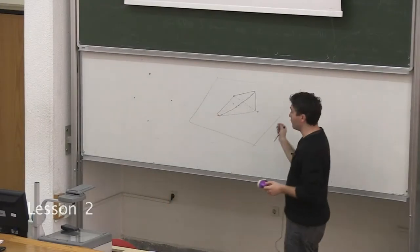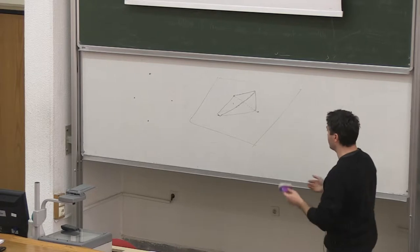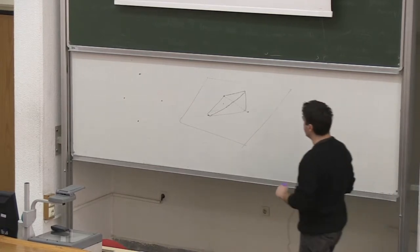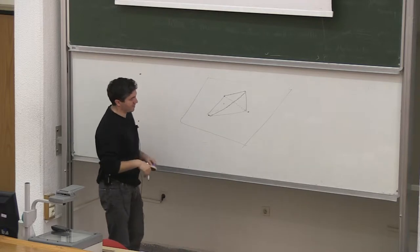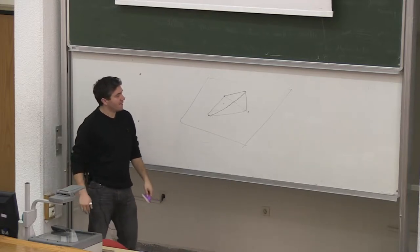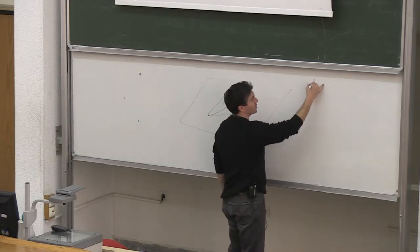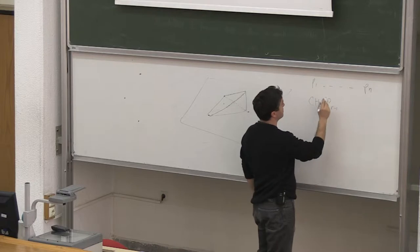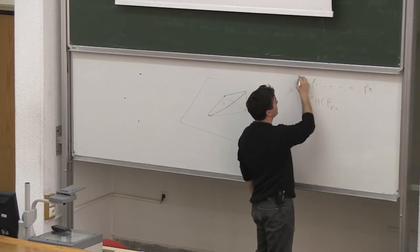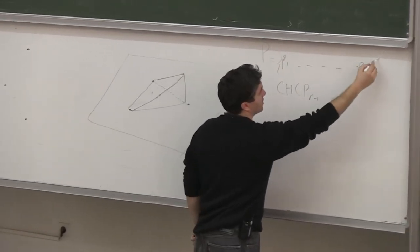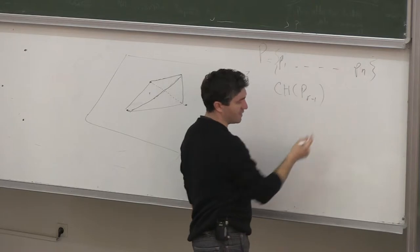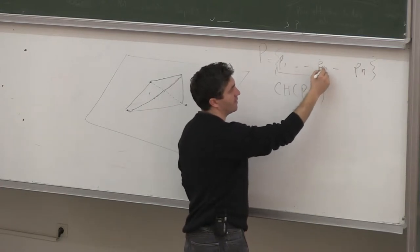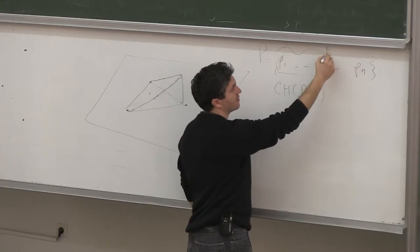The algorithm to compute convex hulls in three-dimensional space is easy to describe. Let me first give some definitions. There are n points in total from P1 to Pn. Let CH P_{r-1} denote the convex hull of the first r minus 1 points, and let capital P_{r-1} indicate the set of those first r minus 1 points.